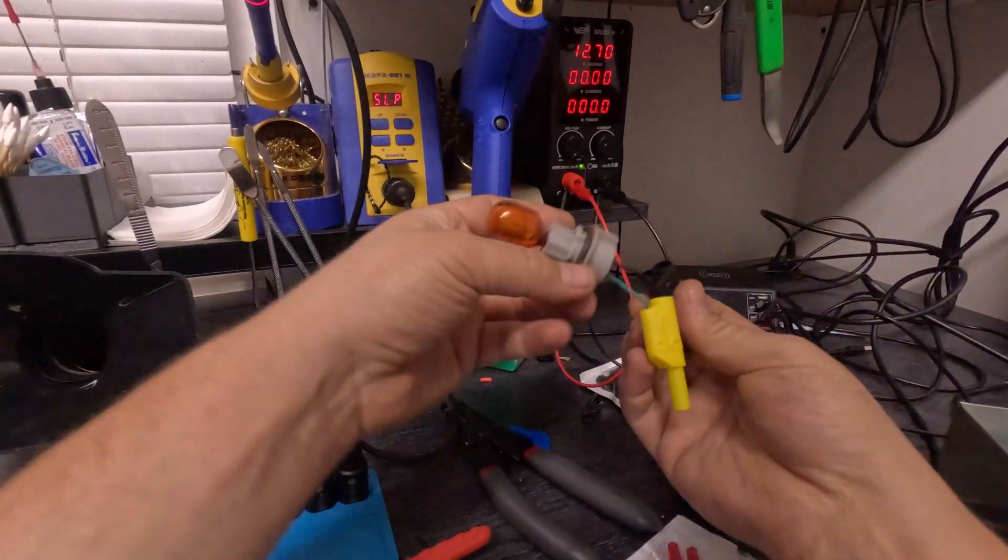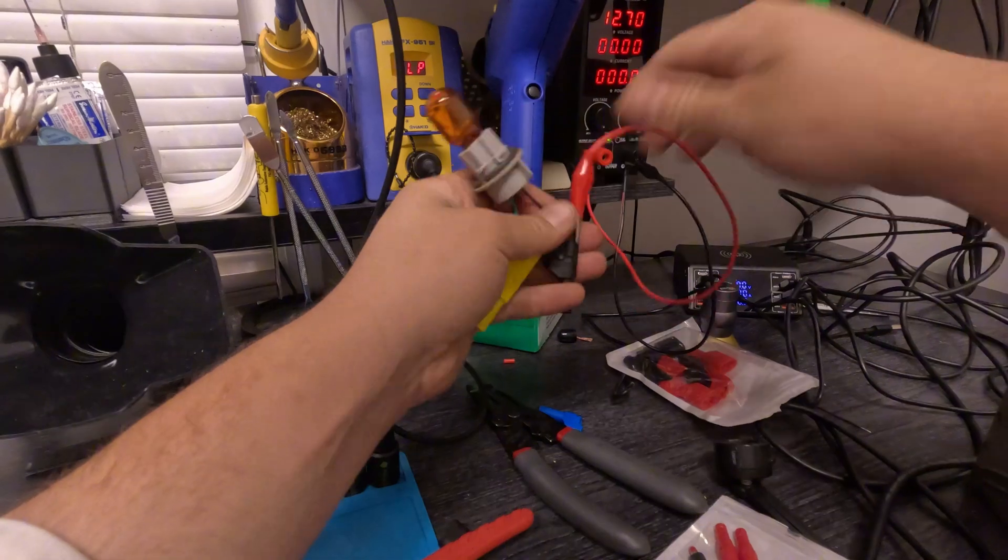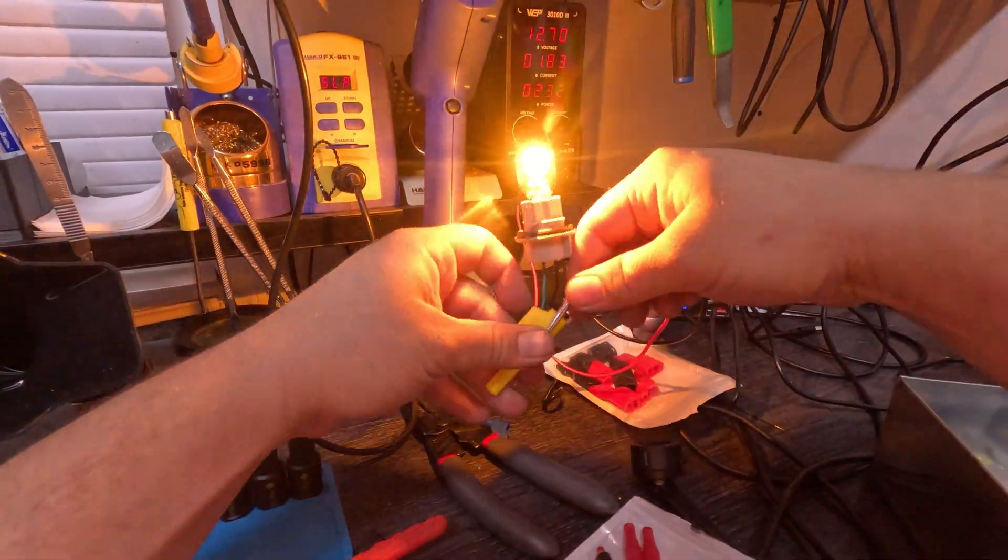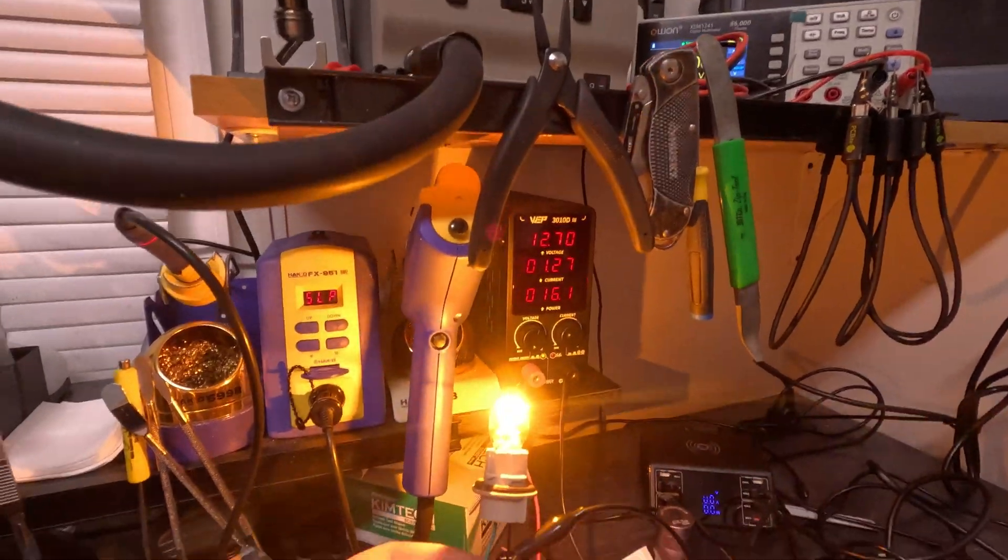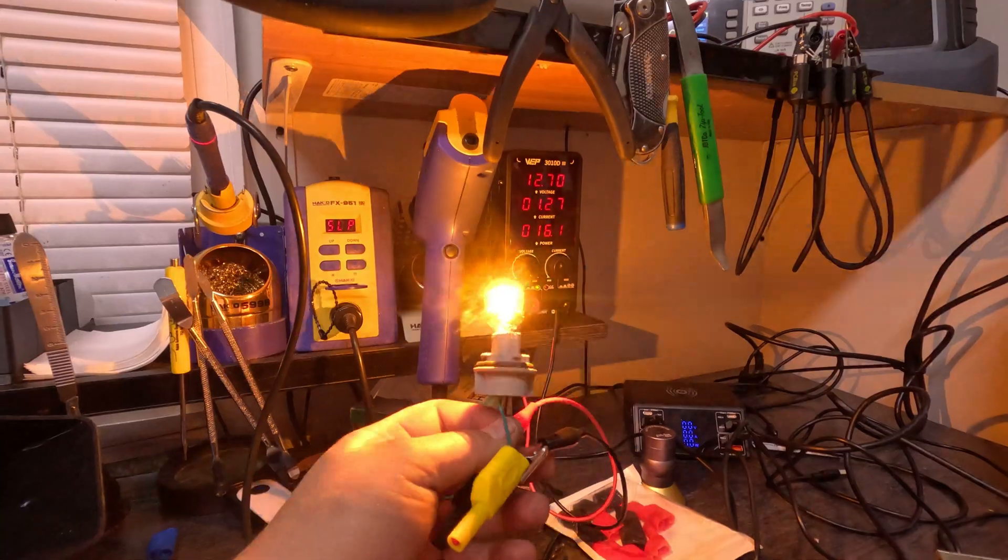And now if I test it, you see, I could just... well, I don't have a wire for it, but I'm just going to plug these clips in the back. There we go. I have 1.27 amps of current going through this with 12.7 volts.